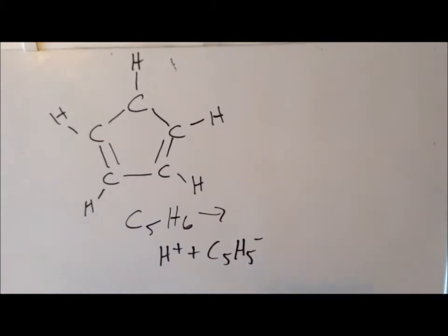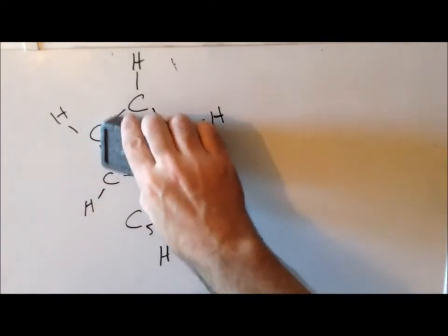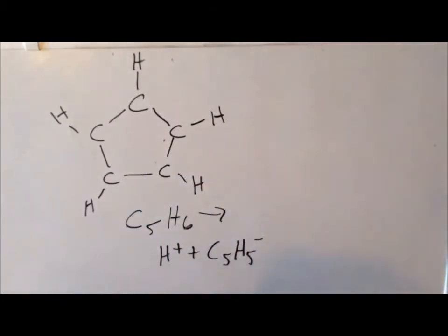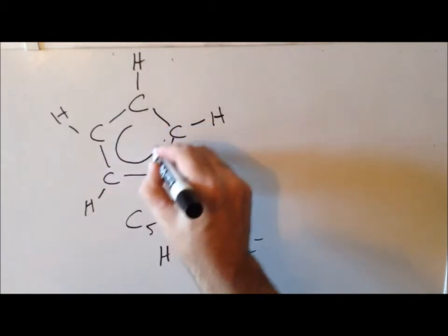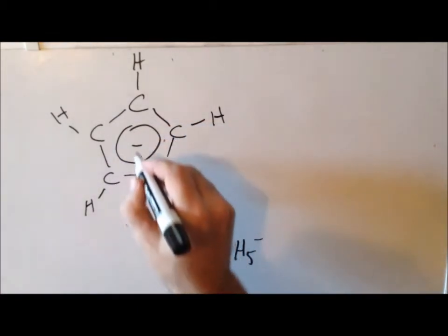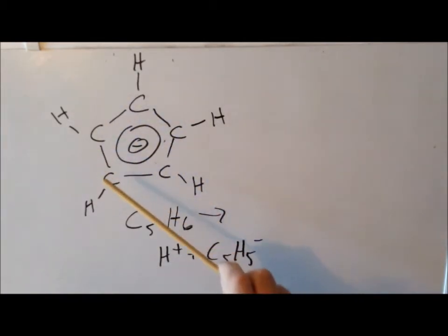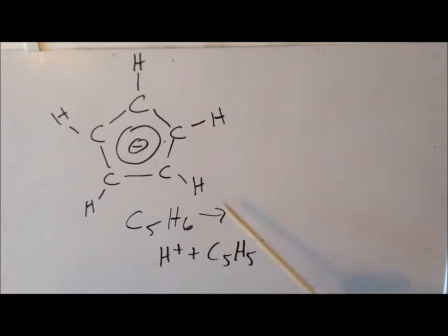We get C5H5 with a minus one charge. This resulting C5H5⁻ we call the cyclopentadienyl anion. We end up with a five-member ring where the electrons are delocalized over the entire ring, with an overall negative charge. Because we originally had five carbon atoms in our pi-conjugated system, we had five pi electrons, and the extra electron from losing one of the hydrogens gives us a total of six pi electrons.